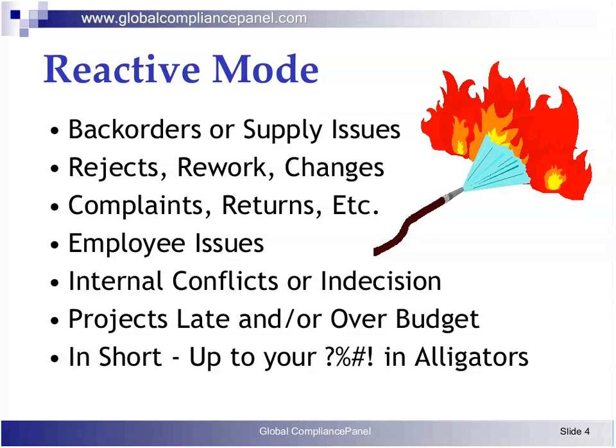Rework, rejects, and changes after product launch are only symptoms of practices and policies for assuring a robust product design and the thoroughness of our validation activities. Complaints and recalls are only downstream symptoms of appropriate and effective quality planning and preventive actions up front during the design and process development process.